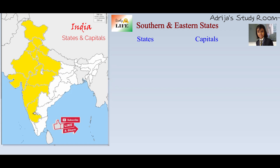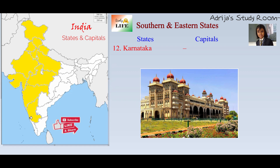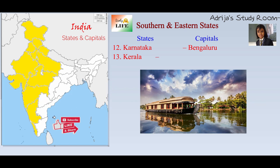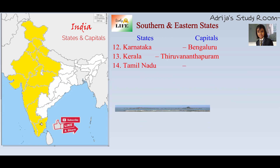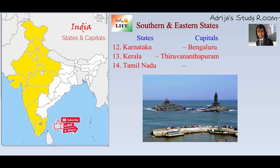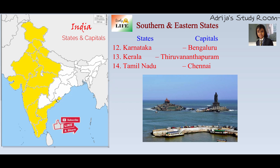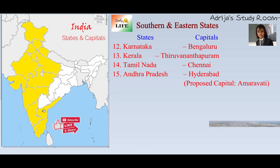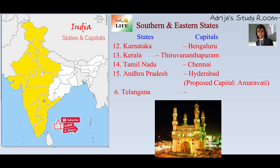This state is Karnataka, and its capital is Bengaluru. And this state is Kerala. Then this state is Andhra Pradesh, and its capital is Hyderabad. Its proposed capital is Amaravati. And this state is Telangana, and its capital is also Hyderabad.